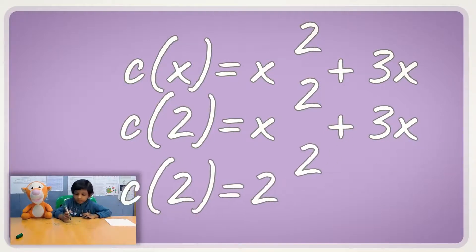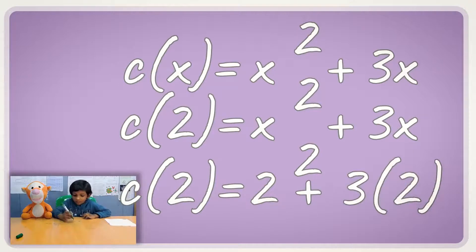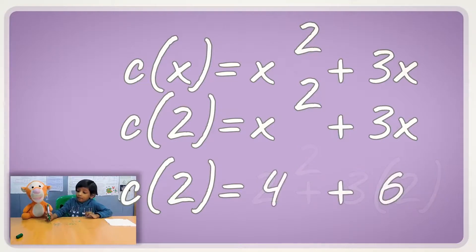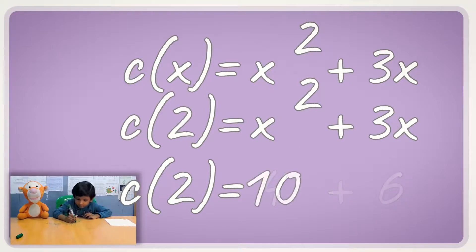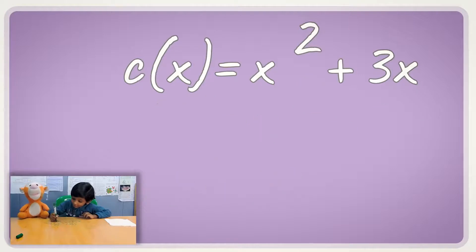And then we just multiply. So, c(2) is equal to 10. Wow, okay. You want to do another one? Yeah, let's do another one.